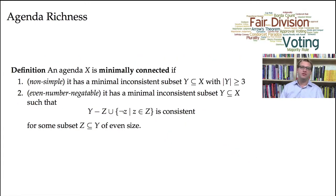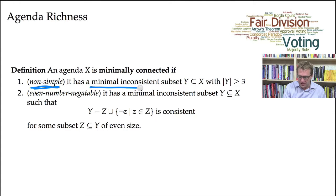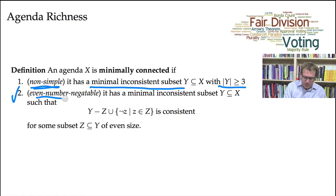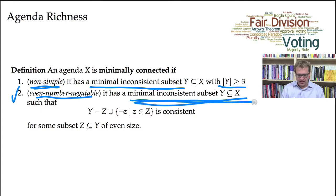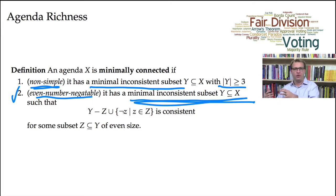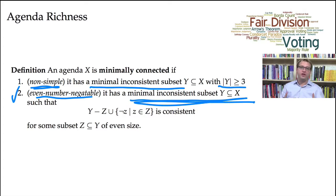Here's our first definition of what it means to say that an agenda is minimally connected. An agenda is minimally connected if: first, it is non-simple, meaning it has a minimal inconsistent subset with at least three elements; and second, it is even-number negatable, meaning it has a minimally inconsistent subset Y such that you can find a subset Z of Y with an even number of elements, remove those elements, replace them with their negations, and the resulting set is consistent.